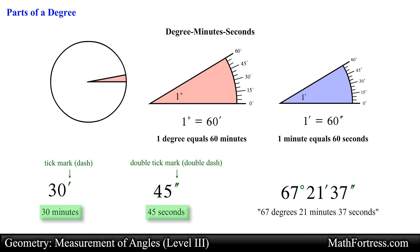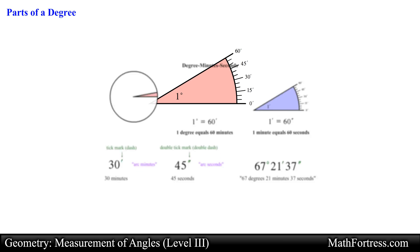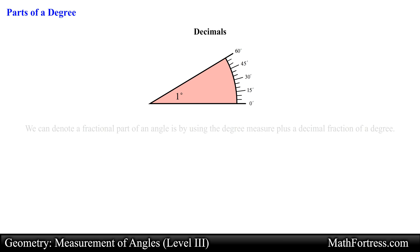When minutes and seconds are used alone, we usually say arc minutes and arc seconds to avoid confusion with units of time. A second way of denoting a fractional part of an angle is by using the degree measure plus a decimal fraction of a degree.